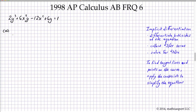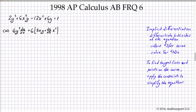Let's get started with implicit differentiation to find dy/dx. We've got 6y squared times dy/dx. We'll have to use the product rule on the next term, so pulling out the 6, we get the derivative of the first term: 2xy, plus the derivative of the second: dy/dx times x squared.